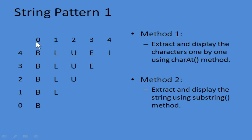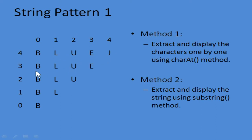Now let's discuss the first method. In number patterns we discussed the same approach — for string patterns, just replace the characters with their position values. For example, replace 'BlueJ' with position values 0, 1, 2, 3, 4 for the first row. The second row will be 0, 1, 2, 3. The third row will be 0, 1, 2, and so on.